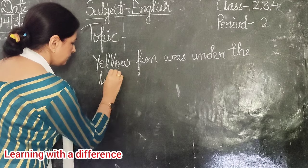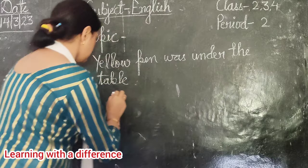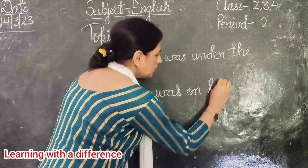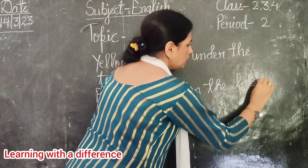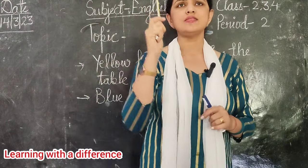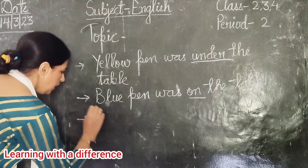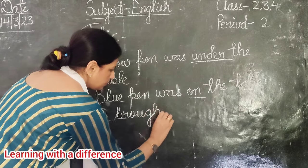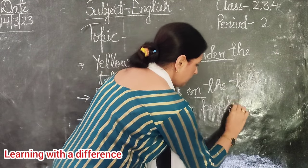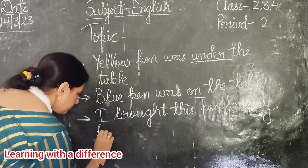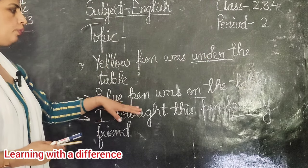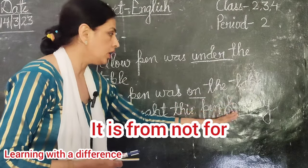Write it out. And see — this pen was the blue pen, which was on the table. One was under the table and the other was on the table. And I brought this pen for my friend. So: yellow pen was under the table. Blue pen was on the table. I brought this pen for my friend.